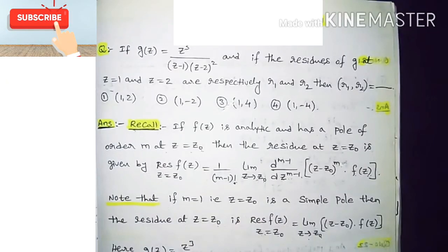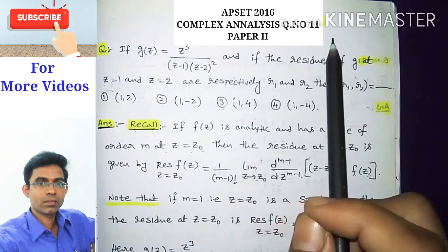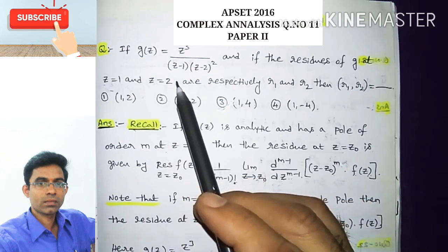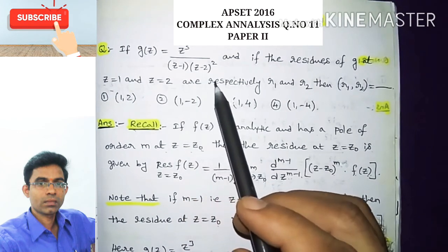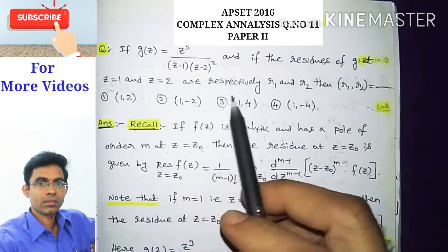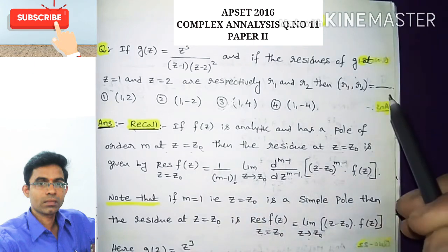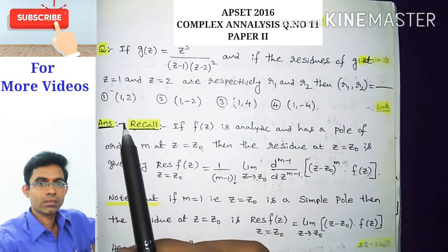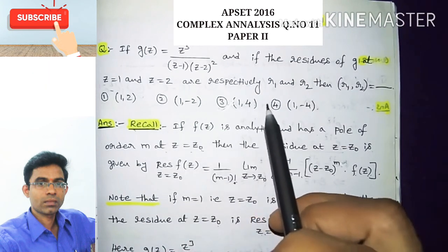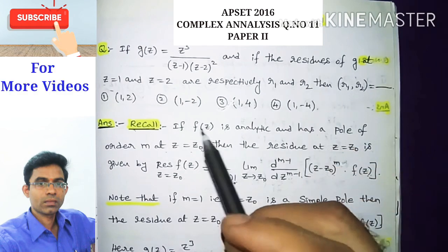Hi everyone, this is Ram Krishna, welcome to my channel. In this video I am going to discuss the 2016 complex analysis question number 11 from paper 2. The question is: if g(z) = z³ / [(z-1)(z-2)²], and if the residues of g at z=1 and z=2 are r1 and r2 respectively, then the pair (r1, r2) equals — with options: (1,2), (1,-2), (1,4), or (1,-4).